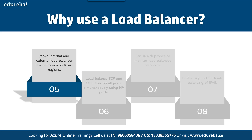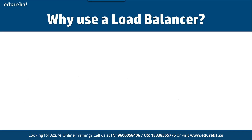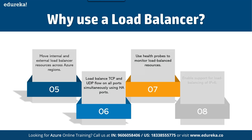Fifth, you can move internal and external load balancer resources across Azure regions, and you can also use on-premise load balancers without any additional testing. Sixth, you can load balance TCP and UDP flows on all ports simultaneously using HA Ports — HA being a cluster configuration. TCP is a reliable protocol where you get acknowledgement of packet receipt, while UDP is not reliable so no acknowledgement is returned. Seventh, you should use health probes to monitor load-balanced resources, and enable support for load balancing of IP-based services.